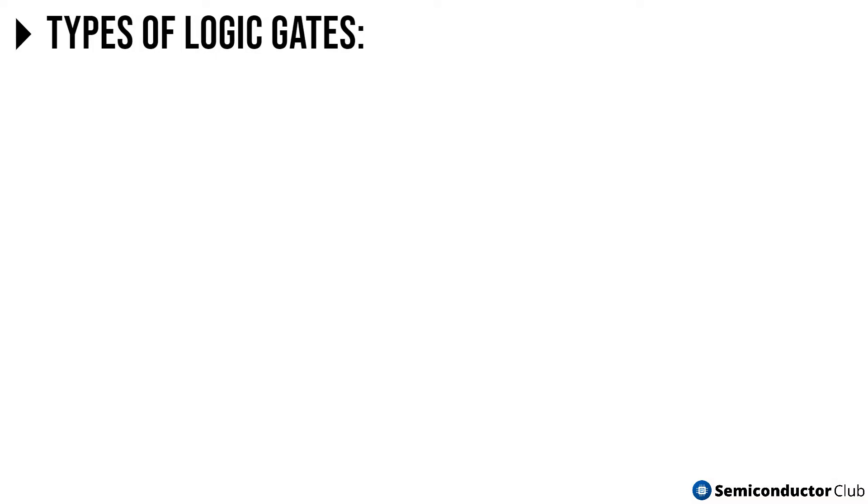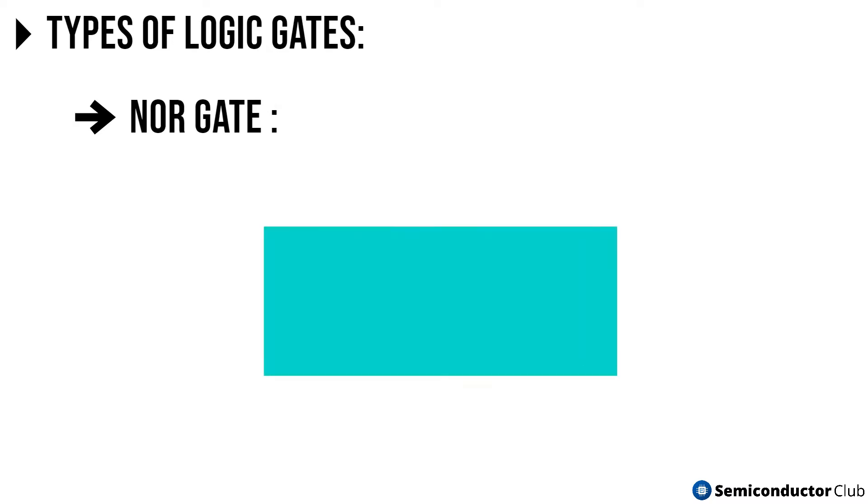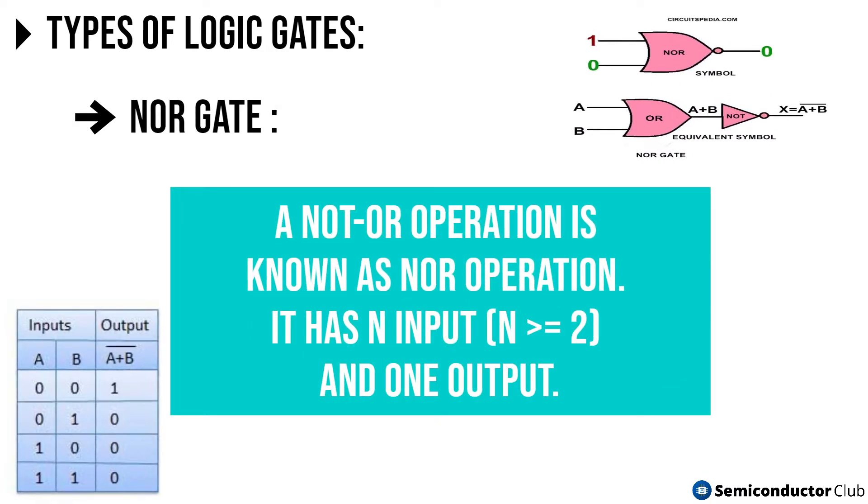Further, we have NOR gate. A NOT OR operation is known as NOR operation. It has N input, N greater than equals 2, and one output.